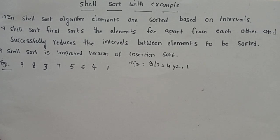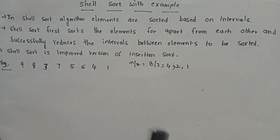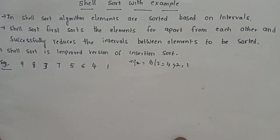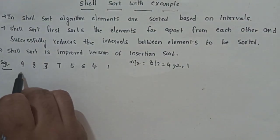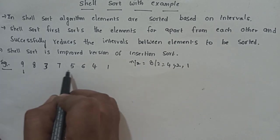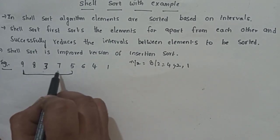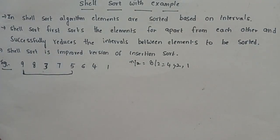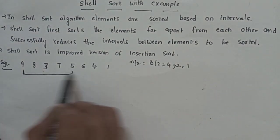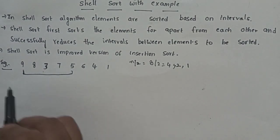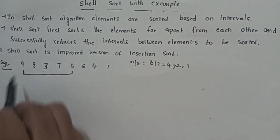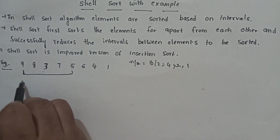We select the number of elements in the array divided by 2. The first interval is 4. We check elements that are 4 positions apart. The number of elements in the array is 8. We compare element at position 1 with element 4 positions ahead. Here 9 and 5: since 5 is less than 9, we swap them. Array becomes: 5, 8, 3, 7, 9, 6, 4, 1.